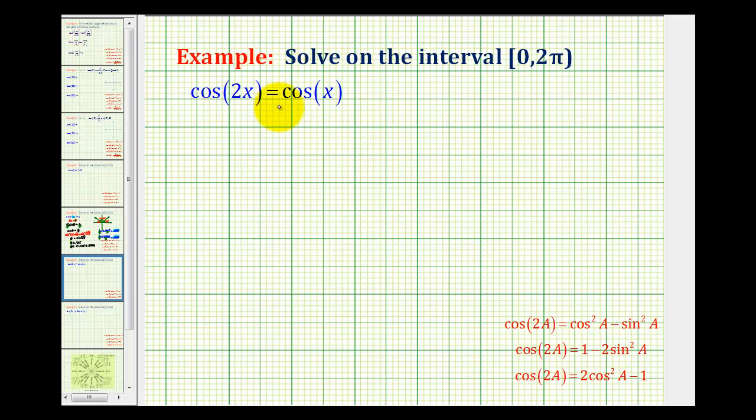The issue with this equation is we have one trig function but one angle is 2x and the other is x. So we're going to use a double angle identity to perform a substitution on the left side so all the angles will be x.